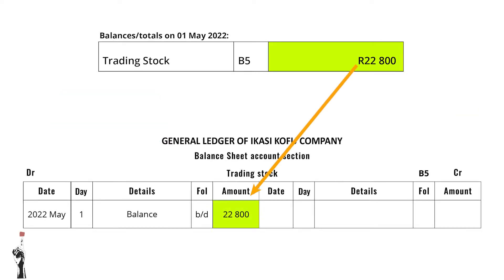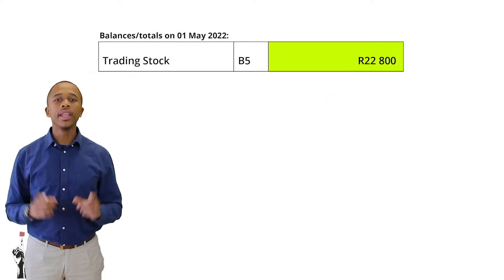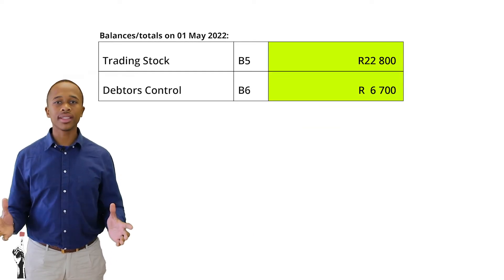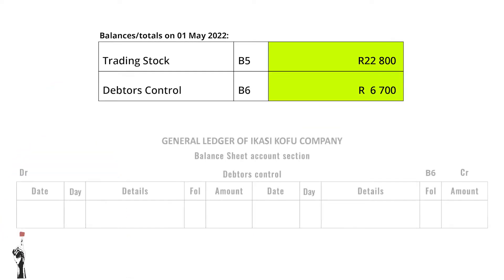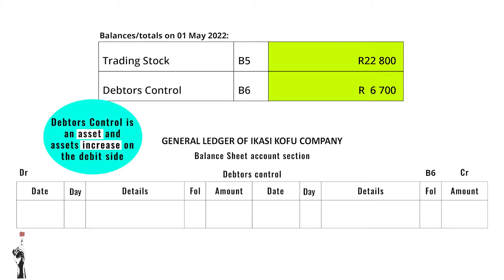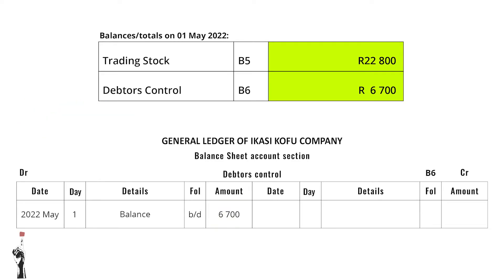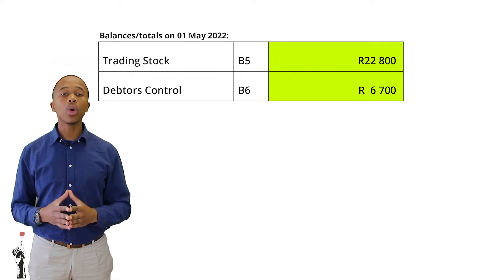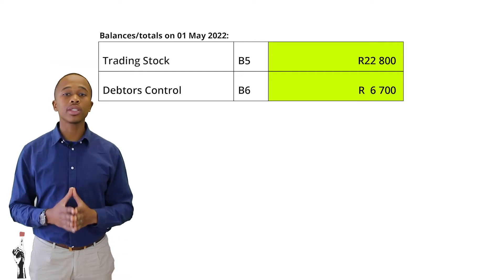The twenty-two thousand eight hundred rand should be recorded on the debit side. Next is the debtors control balance. Debtors control is also an asset, so it will increase on the debit side and decrease on the credit side. This means that the balance should be recorded on the debit side. Now we've done the balances for the general ledger.